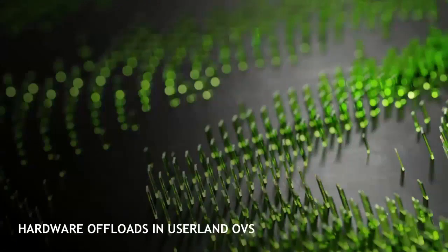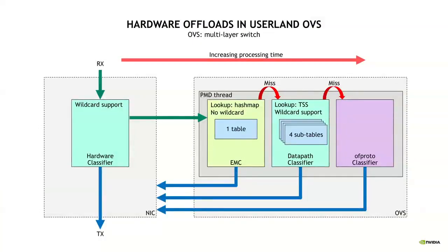Let's begin with the current hardware offload process. OVS is a multi-layer switch. It is often represented in three stages, with three packet classifiers mapping packet matches to processing actions. Each packet goes through the switch layers one after the other. Whenever a match is found, the associated actions are executed.